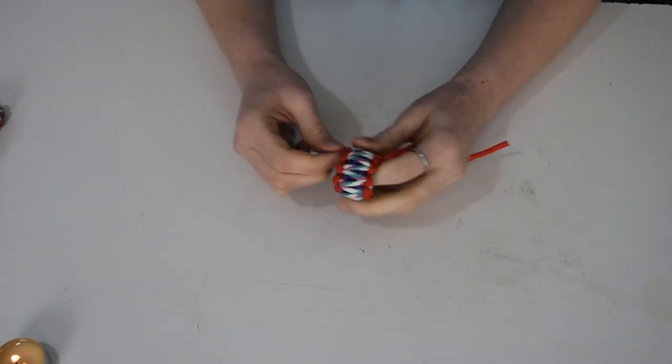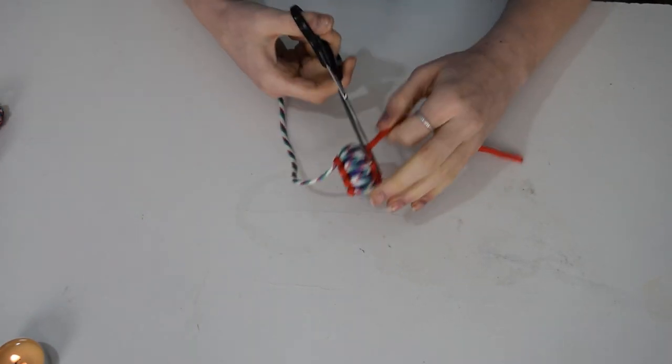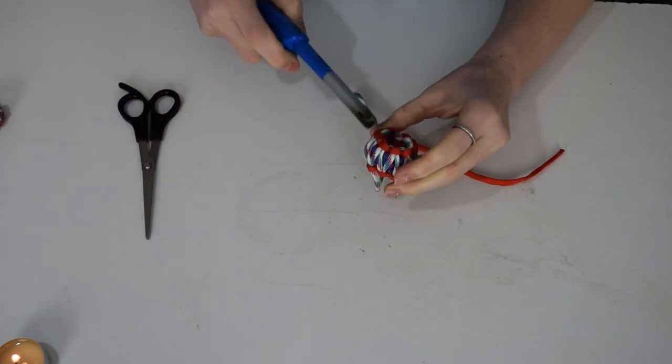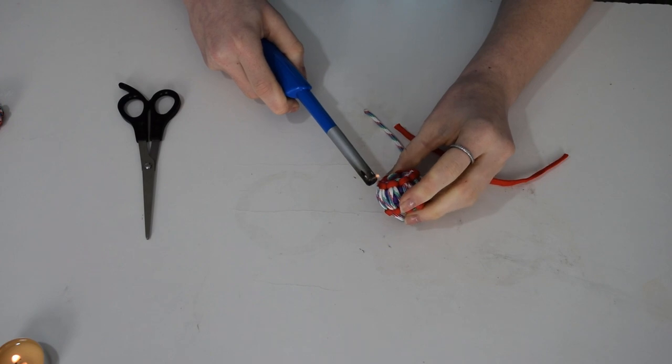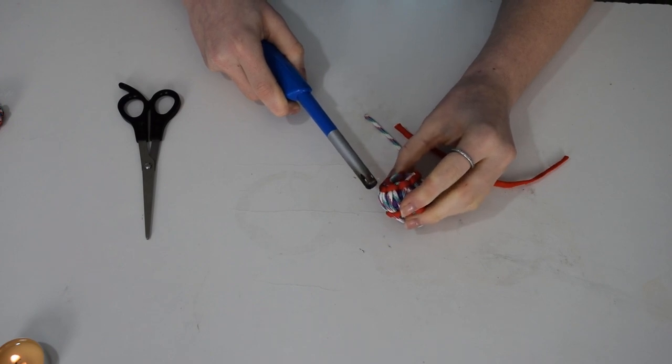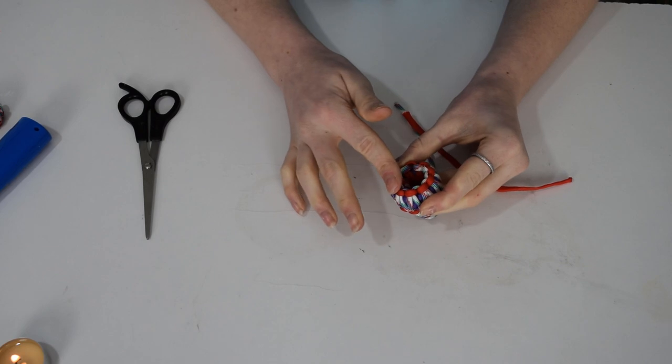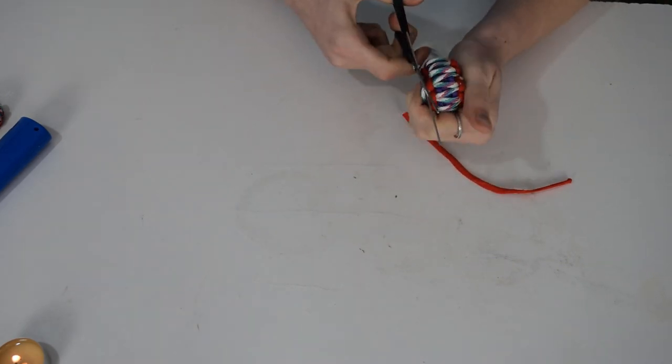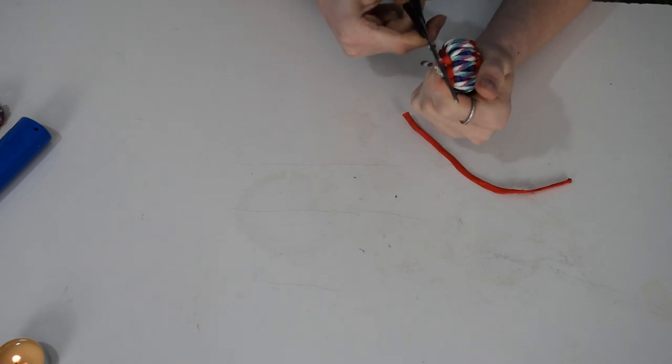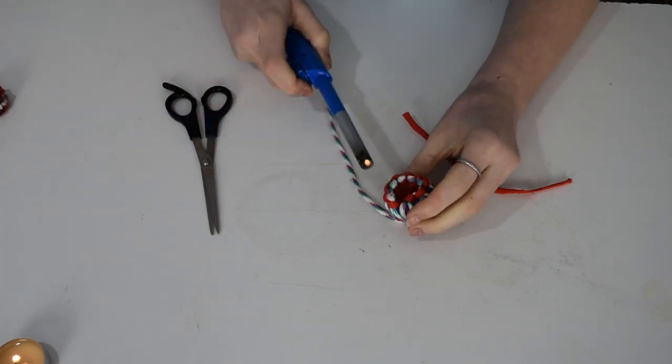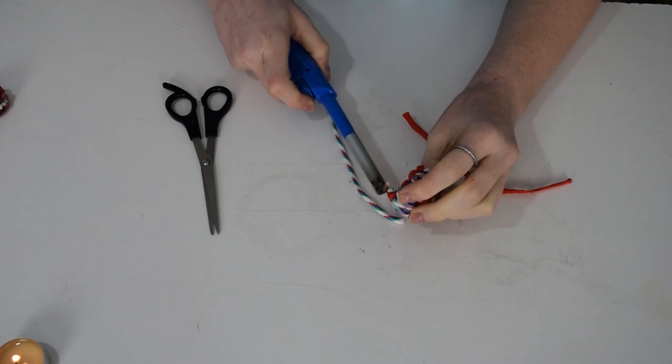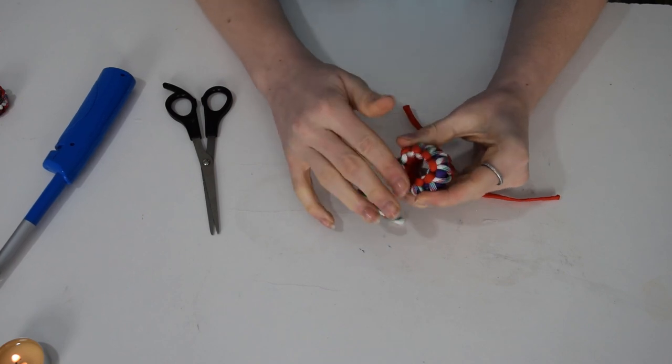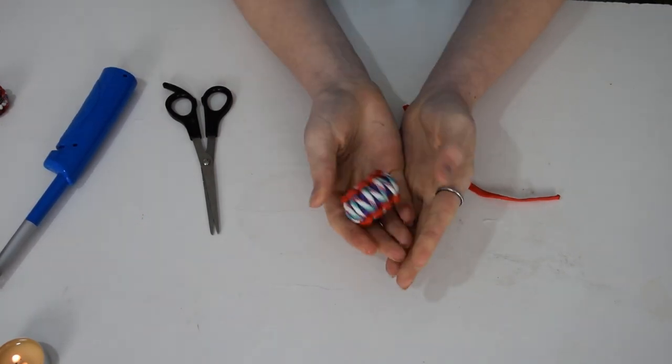Now you need to snip the ends off again and melt them. Here we go. So there you have it, your finished woggle.